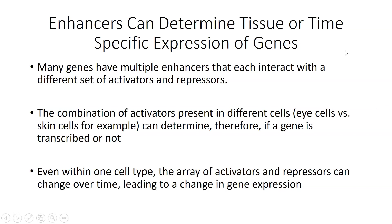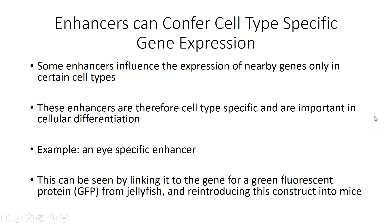Let's switch and talk more about enhancers in general and their importance in regulating gene expression. There are many different types of enhancers, and most genes have multiple enhancers. A given enhancer can confer tissue or cell-type specific expression of a gene because different types of cells are equipped with different types of activators or repressors. Let's use the example of eye cells versus skin cells with a gene that has two different enhancers.